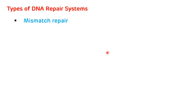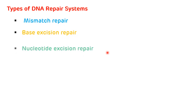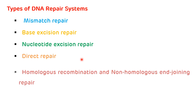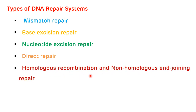There are five major types of DNA repair systems. First is mismatch repair. Second is base excision repair. Third is nucleotide excision repair. Fourth is direct repair. And the last one is homologous recombination and non-homologous end joining repair. We will see each of these DNA repair systems in detail in the next few slides.